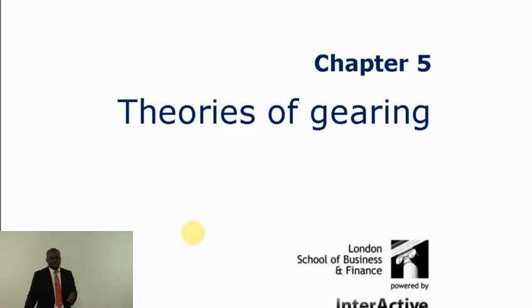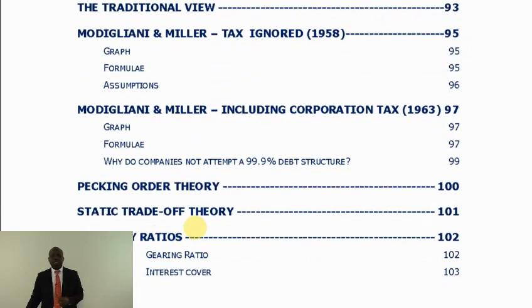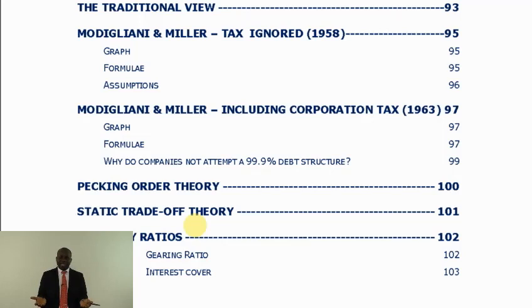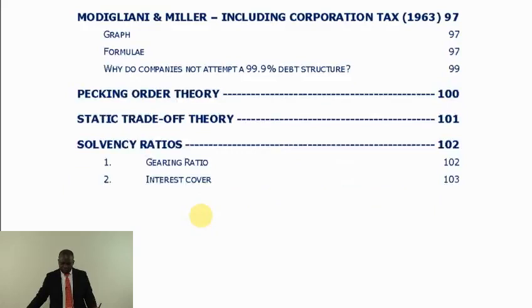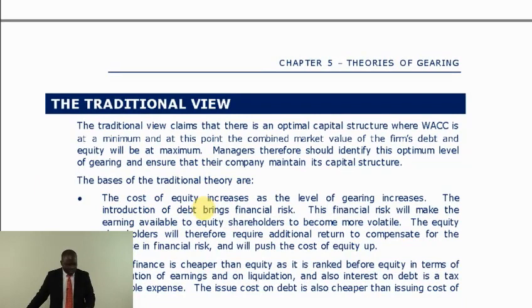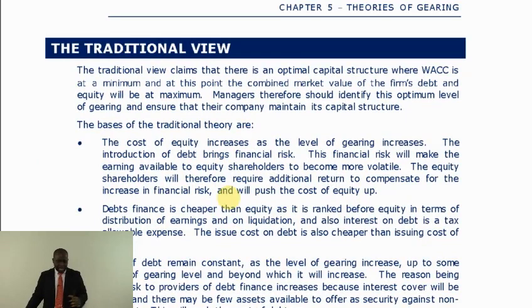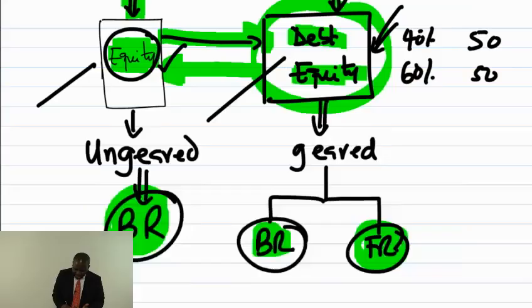The theories of gearing explain the relationship between capital structure and WACC. When our capital structure changes — either to all equity or to debt and equity — our risk profile changes and our cost of capital changes, which in turn changes the present value of cash flows and thus the company value. The first theory is the Traditional Theory. The traditional argument is important not for drawing graphs but for understanding the principle, since the examiner brings it in scenario form.